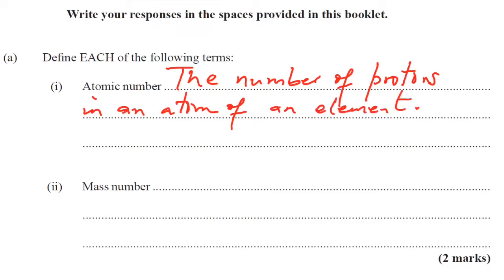Mass number, this refers to the sum of the protons and neutrons in an atom of an element. Mass number refers to the sum of the protons and neutrons in an atom of an element.